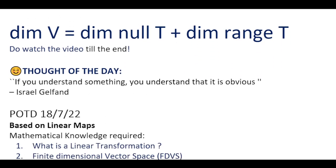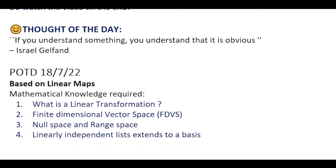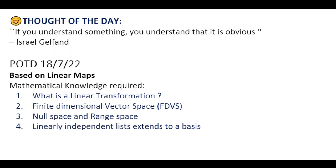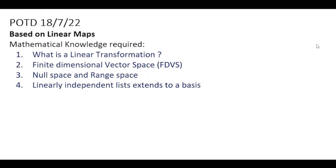This is the statement: given any vector space V which is finite dimensional, then the dimension of the vector space V equals the dimension of the null space of T plus the dimension of the range space of T. This was the statement of the rank-nullity theorem. This theorem is based on linear maps and these are the four notions which we require in order to prove this theorem.